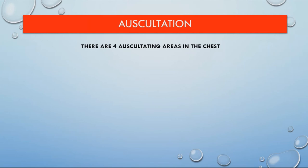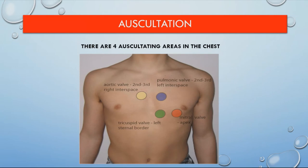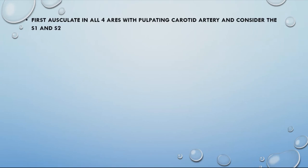Auscultation: there are four auscultating areas. The apex area (red) indicates the mitral valve. The left sternal border / left lower sternal border (green) indicates the tricuspid valve. The right second intercostal space (yellow) indicates the aortic valve. The left second intercostal space (blue) indicates the pulmonary valve.